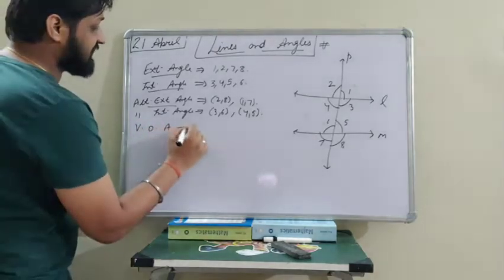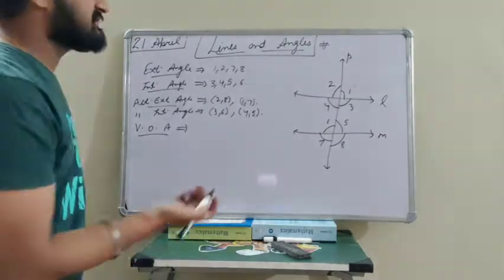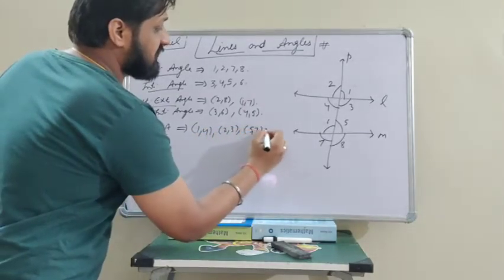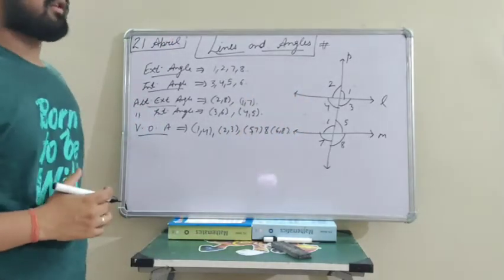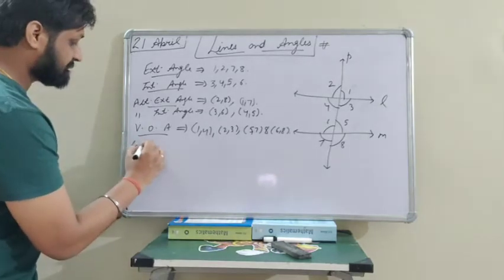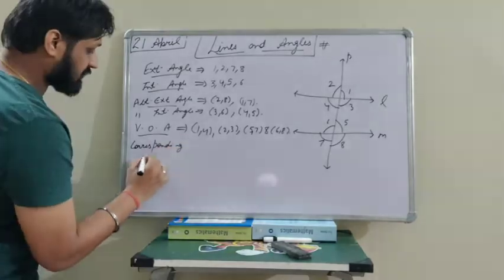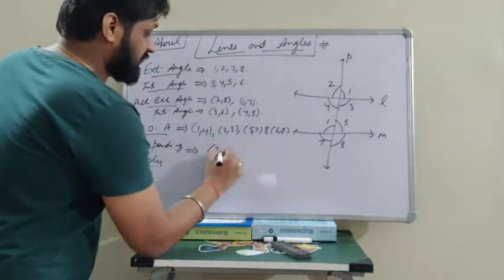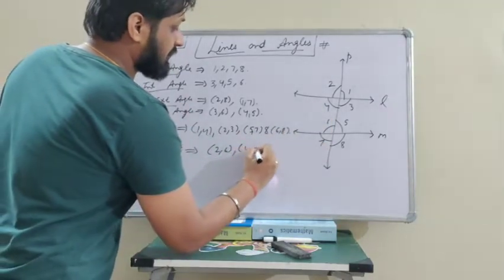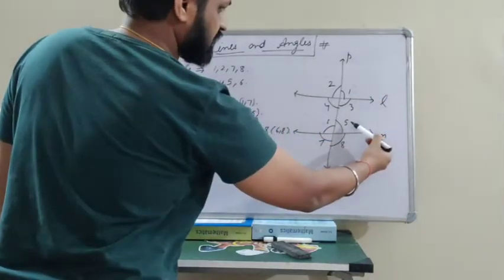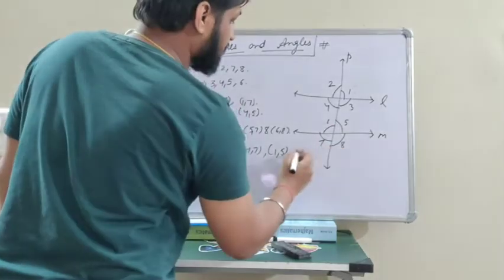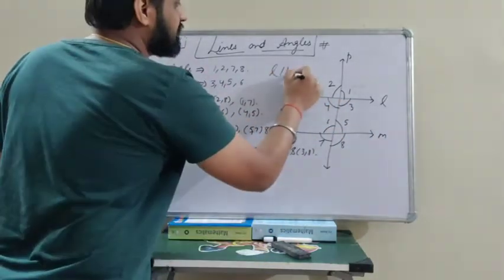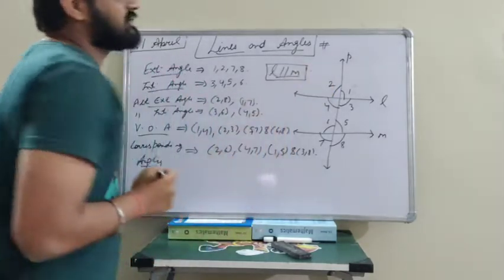Now, vertically opposite angles, abbreviated as VOA. Vertically opposite angles: 1 is vertically opposite to 4, 2 is opposite to 3, then 5 and 7, and similarly 6 and 8. These are the four pairs of vertically opposite angles. For corresponding angles: angle 2 corresponds to angle 6, and 4 corresponds to 7. Also, 1 corresponds to 5, and 3 corresponds to 8. The condition here is that line L should be parallel to line M.